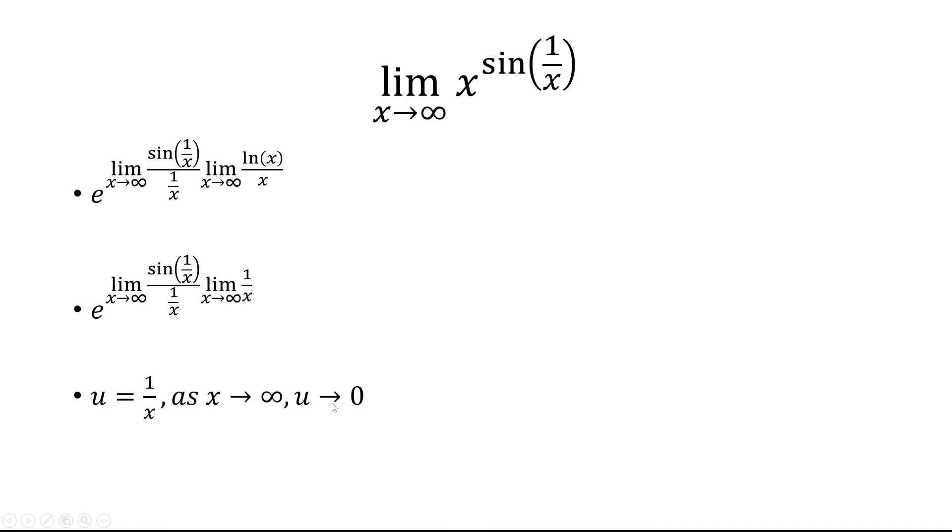So I'm just going to rewrite this limit in terms of u. So u approaches 0, sine u over u. We know that's just going to be 1. That's a common limit that we should have memorized.